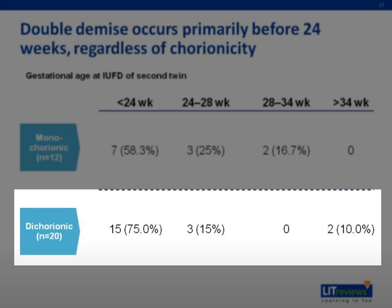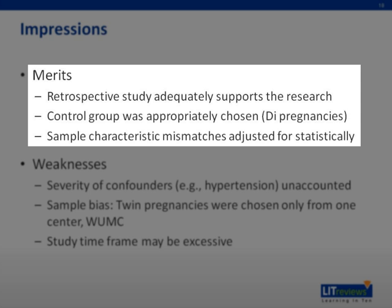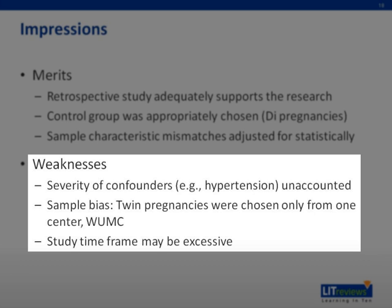The study was well done in several aspects. Firstly, this is a retrospective study with a large sample size that supports the research topic in question. Secondly, the authors took good effort in adjusting for characteristic mismatches of the sample using statistics. However, the weakness of the paper mainly lies in the extensive study time frame — over 18 years, the practice of management of twins might have changed considerably, hence influencing the pregnancy outcomes studied. There is also sample bias because twins from only one medical center were used. Additionally, in characterizing confounders, the authors chose to use a yes or no method instead of a continuous model.